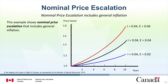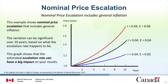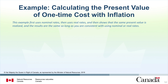This example shows nominal price escalation that includes general inflation. Assuming a general inflation rate of 4% and nominal escalation rate of 6%, when the escalation rate decreases, the overall price factor also decreases as the rate drops from 4% to 2%. The variation can be significant over 10 years based on what the escalation rate happens to be. This graph shows that the estimated escalation rate can have a big impact on your results.